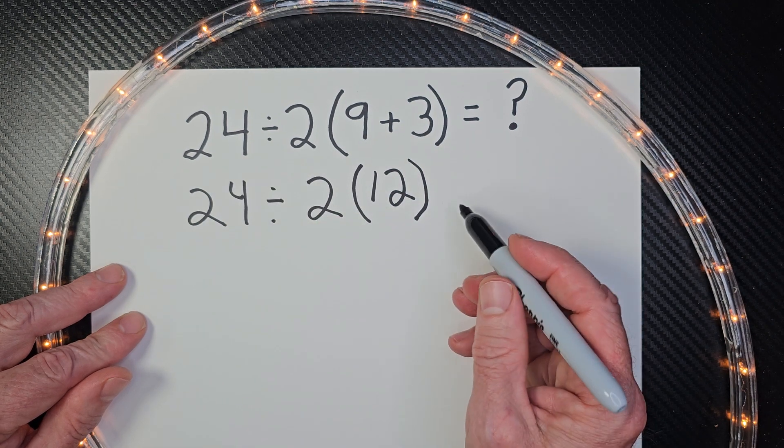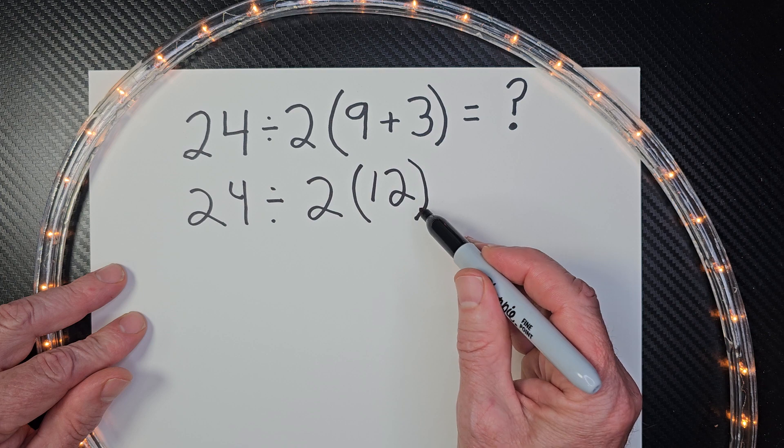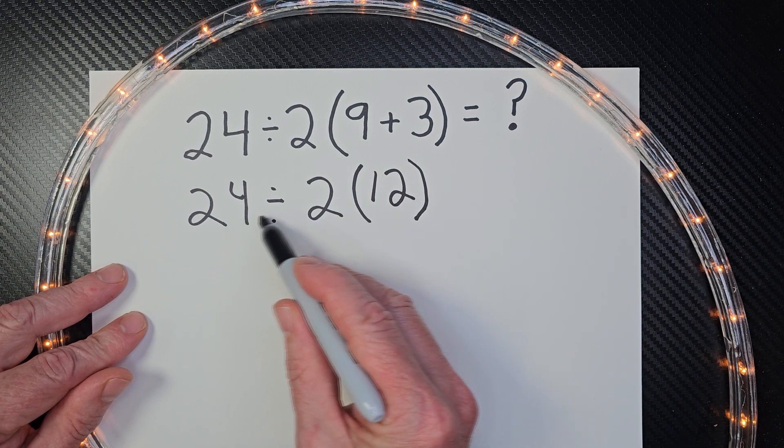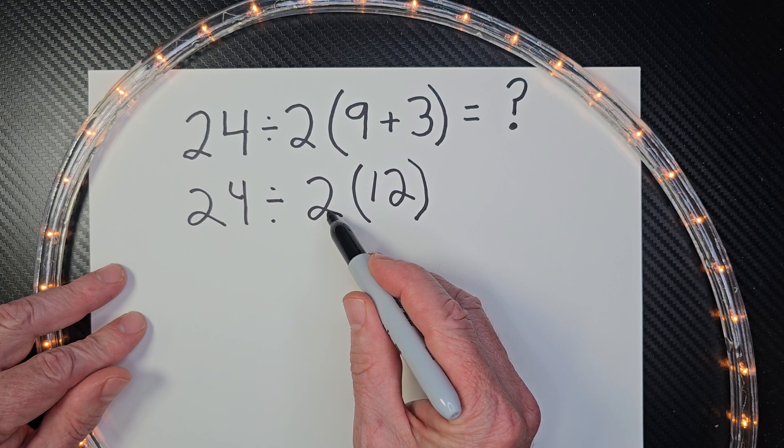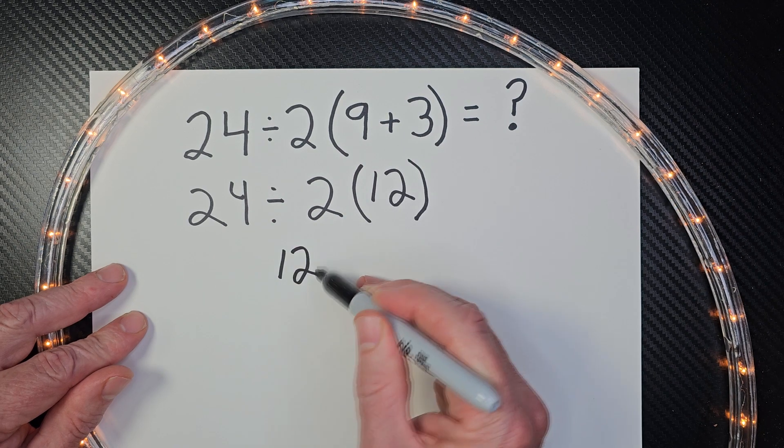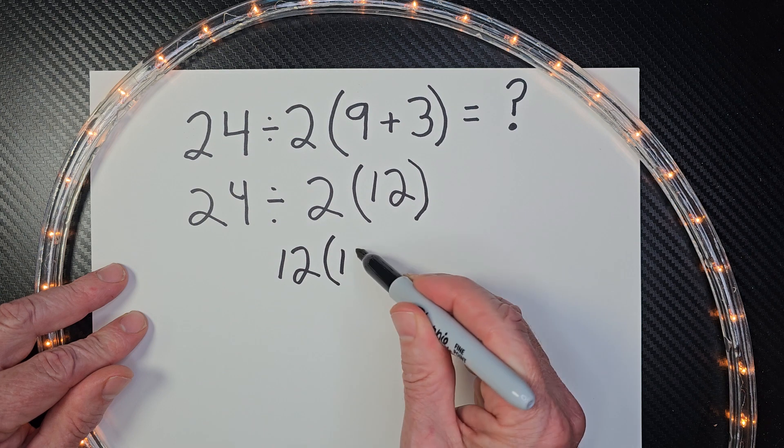Now I do multiplication and division from left to right. So I go 24 divided by 2, which would be 12, and then I have the 12 right here.